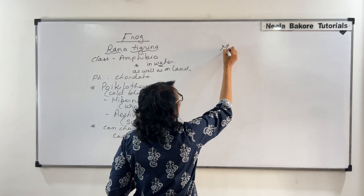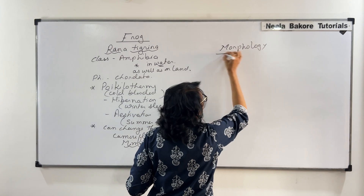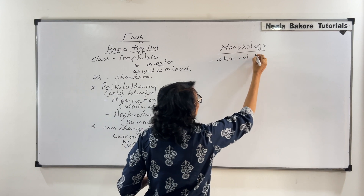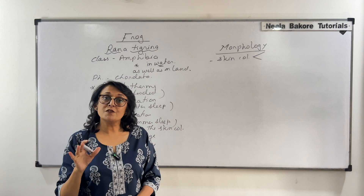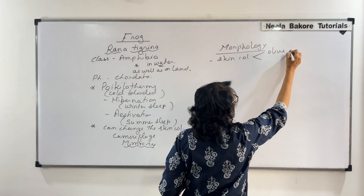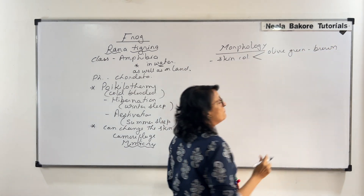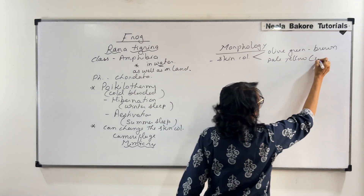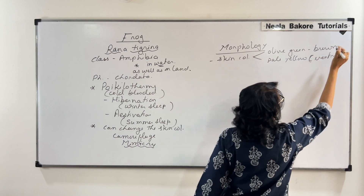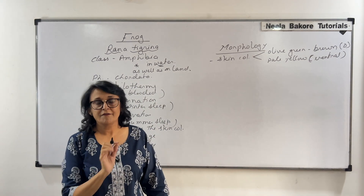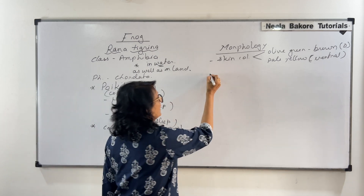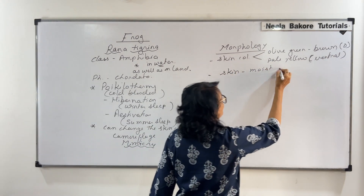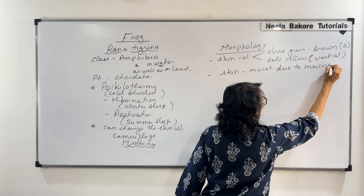Looking at the morphology — that is how they appear from outside — the skin color on the dorsal and ventral sides is different. The dorsal side, visible from the top, is olive green to brown depending on their surroundings. The ventral side is pale yellow. The skin is moist because they have mucus glands.